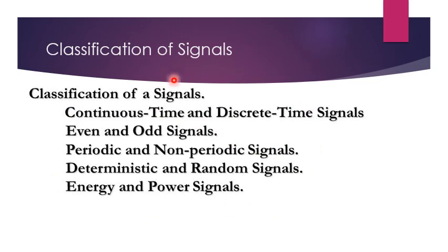The classification of signals includes: continuous time and discrete time signals, even and odd signals, periodic and non-periodic signals, deterministic and random signals, and energy and power signals. You may have studied some of these in signals and systems.